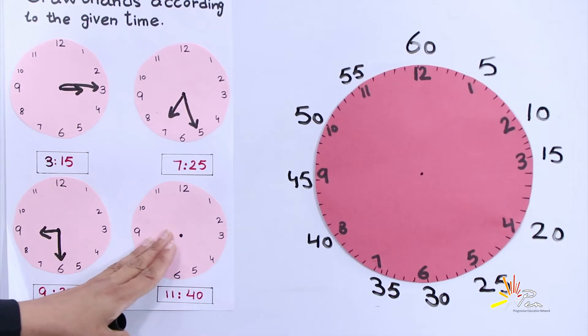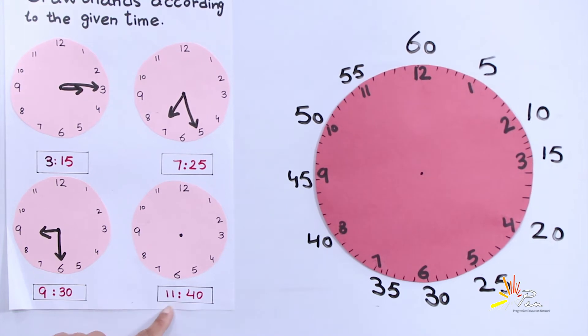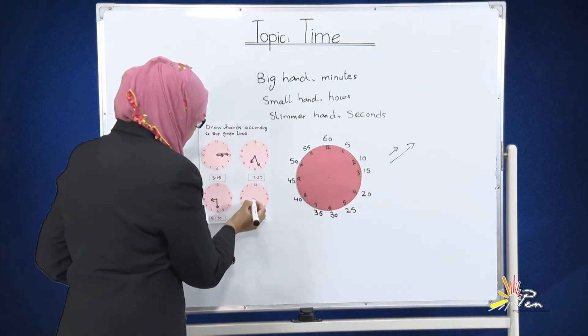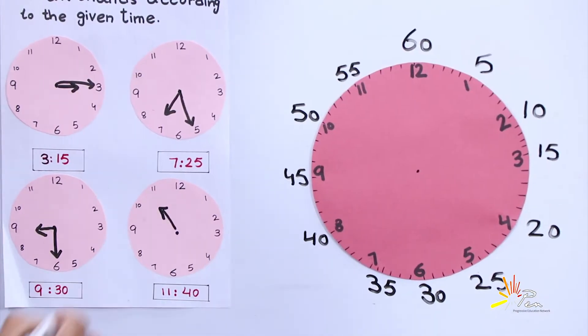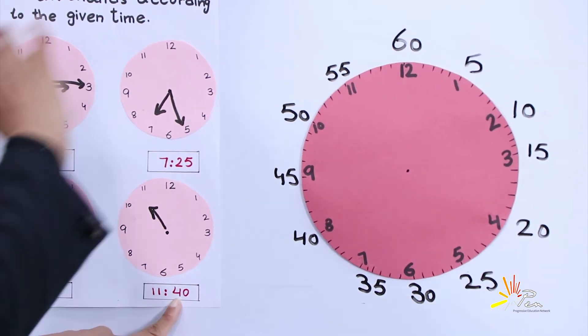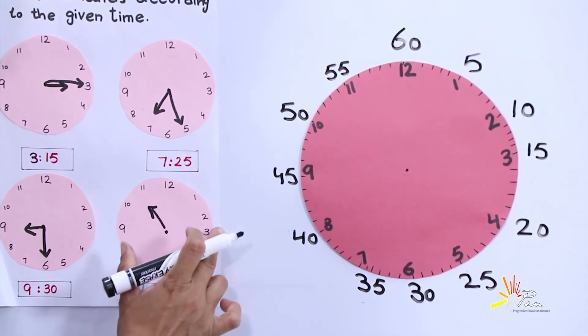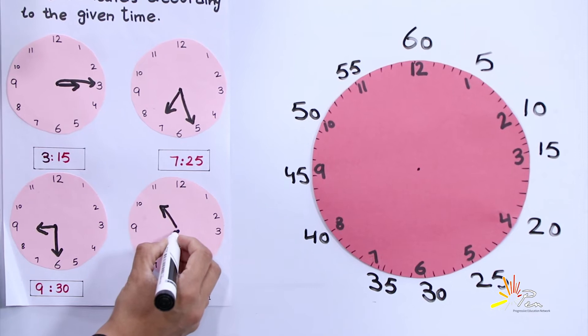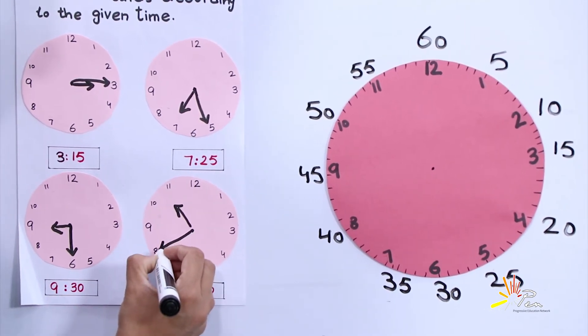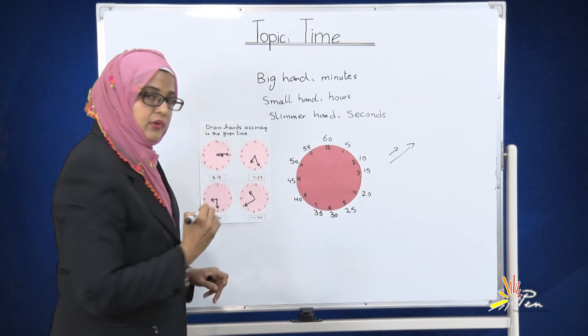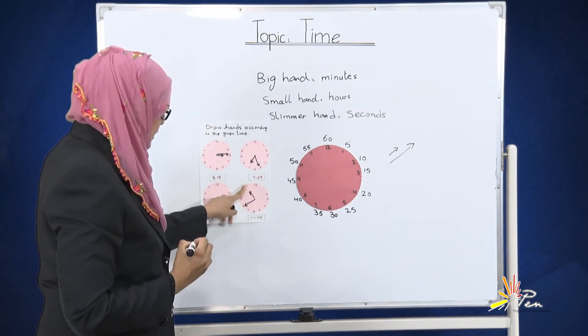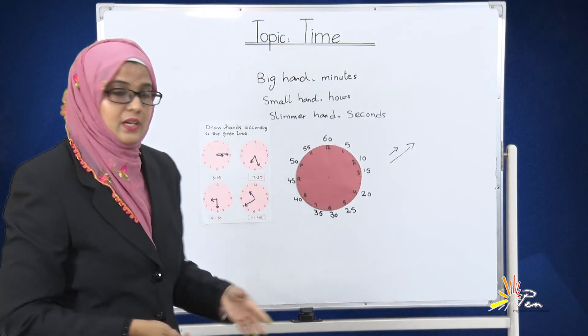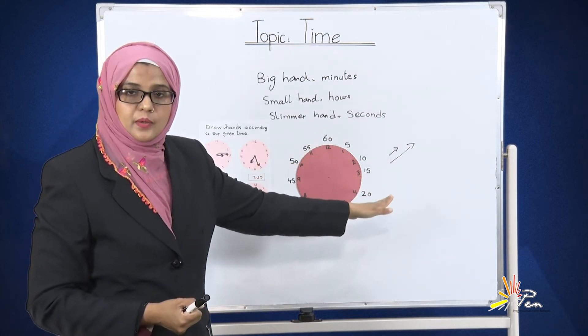The last clock is here and we have time 11:40. 11, small hand for hours. 11:40. We will read the table of 5: 5, 10, 15, 20, 25, 30, 35, and 40. 8 tells us the number of 40. 40 minutes means 11:40. Okay students, this was the easy way to draw the hands of hours and minutes.